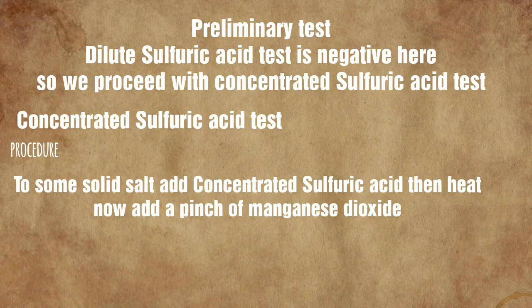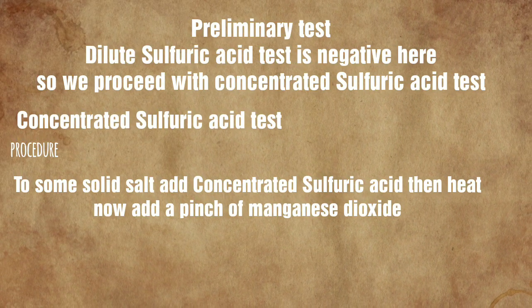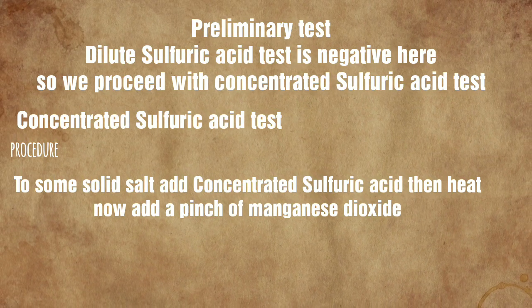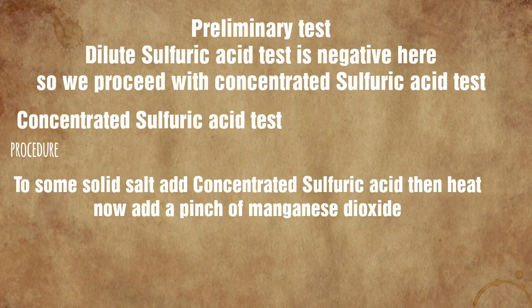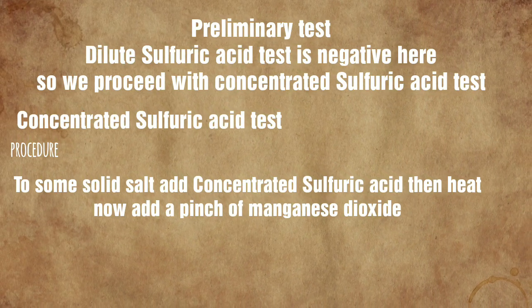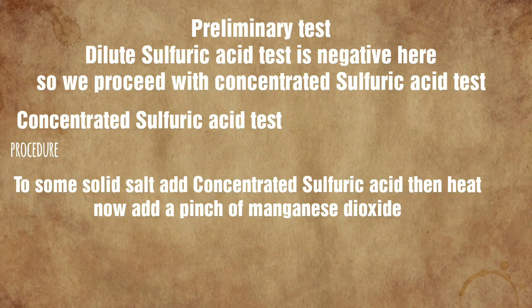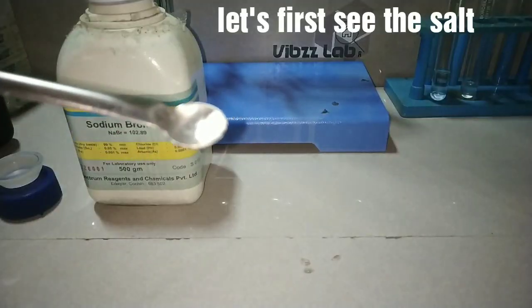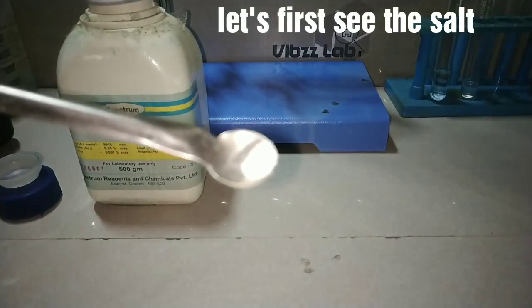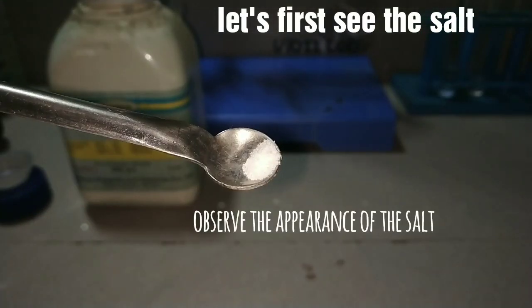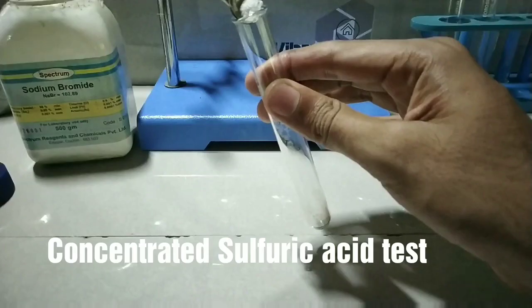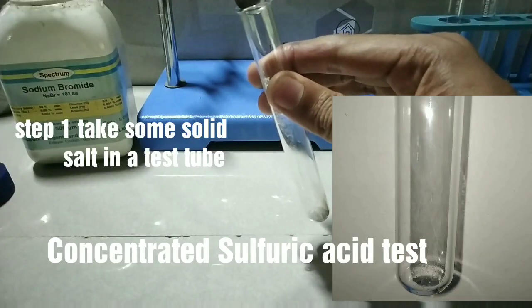For the preliminary test, the dilute sulfuric acid test is negative, so we go on to the concentrated sulfuric acid test. The salt is white in color, so we rule out cations like chromium, copper, and nickel.